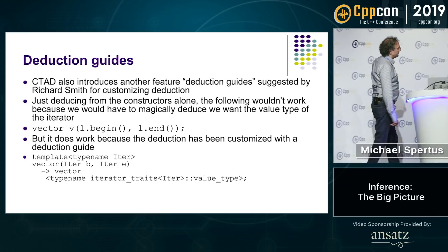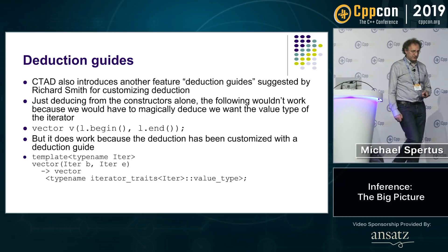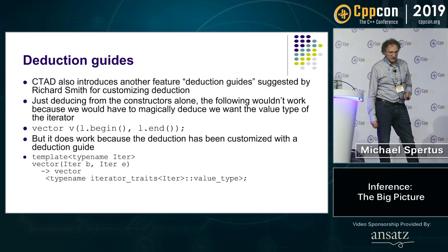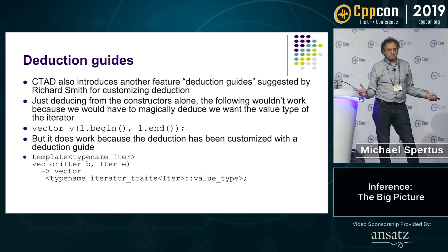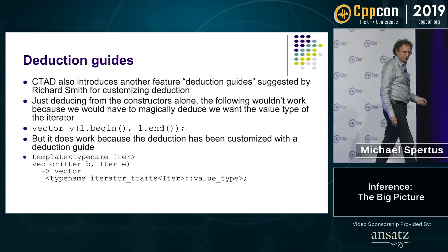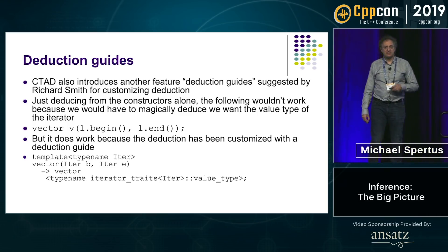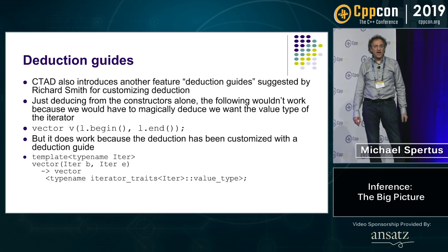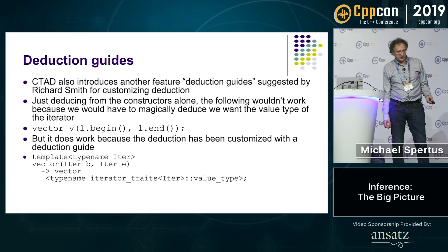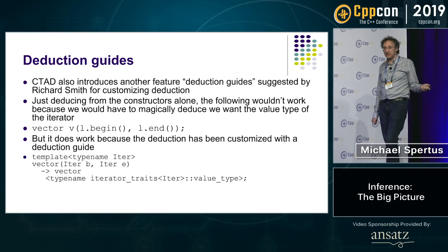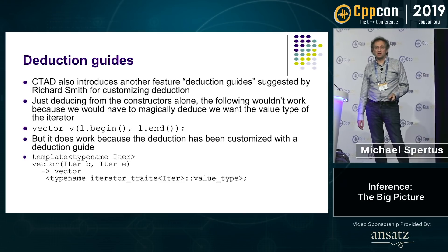C++17 also introduced deduction guides, suggested by Richard Smith, for customizing deduction. C++ deduction doesn't always read your mind. A deduction guide lets you say 'I want to do something that normally wouldn't be deduced.' An example is creating a vector from a pair of iterators and explaining that it should deduce a vector whose value type is the value type of the iterators — something that would never be deduced from the constructor alone.